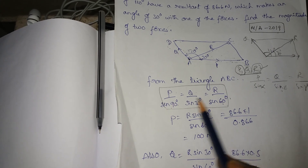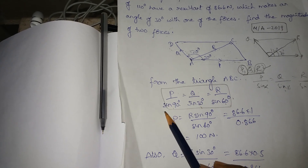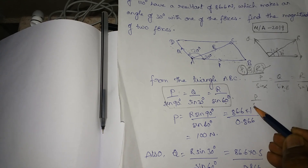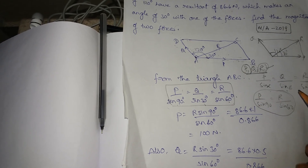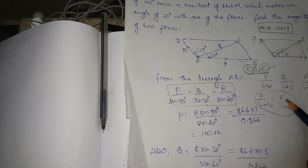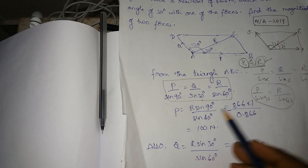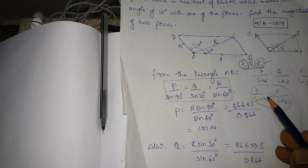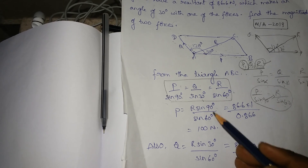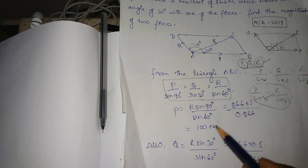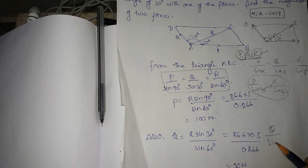So, P divided by sin 90 is equal to R divided by sin 60. So P is equal to R sin 90 divided by sin 60, which gives us R divided by sin 60.